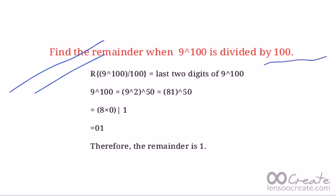is nothing but finding the last two digits of the given number, that is 9 raised to 100. Now we know it becomes easy when we convert the base such that it ends with 1 to find the last two digits.